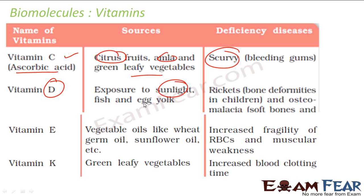Vitamin D you get from exposure to sunlight or from egg yolk or fish. If you don't take this, you get rickets - bone deformities and osteomalacia - bone softness.